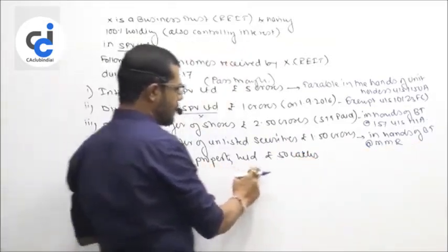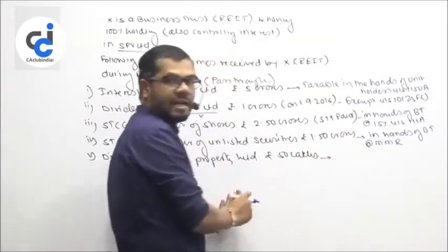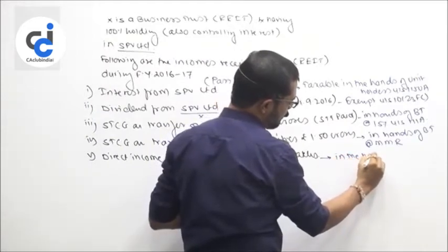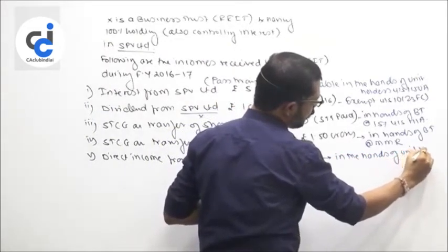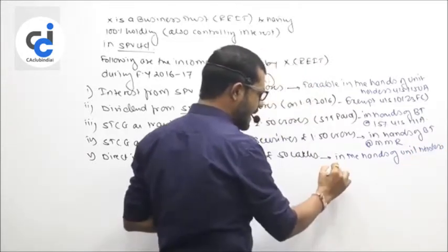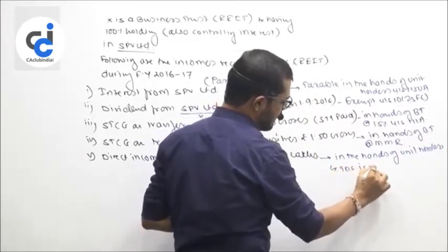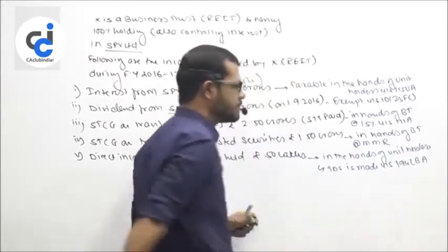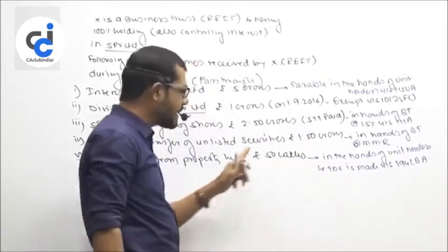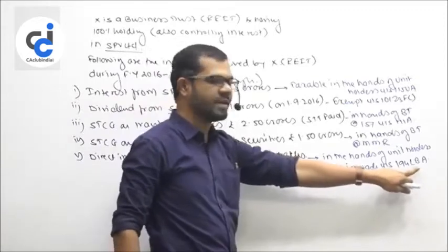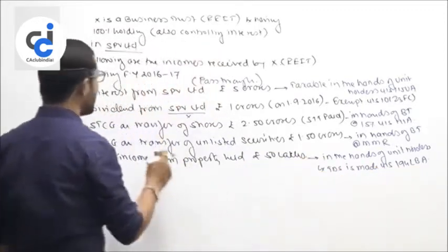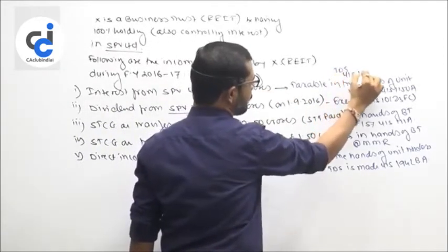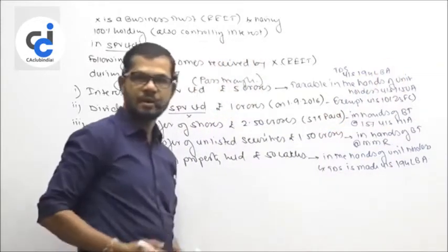And here, direct income from property held — that is pass-through income again. So it is taxable in the hands of unit holders. TDS is made under section 194LBA. When payment is made to the unit holder, TDS must be deducted under section 194LBA. Similarly, for the interest income, which is also pass-through income, TDS under section 194LBA will apply.